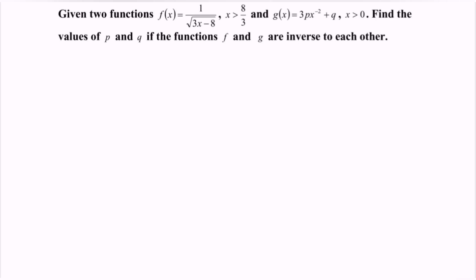Find the value of p and q if the functions f and g are inverse to each other. Meaning f inverse is equal to g. So what we have to do is find the f inverse, then compare with the function g.